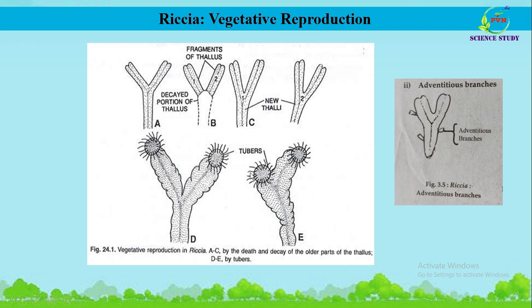The third vegetative reproduction type is tubers. Here you can see the tubers. As the unfavorable season approaches, the apices of some species of Riccia store food material and become thick to form tubers. These tubers are perennating organs, which means they can survive in unfavorable conditions. In unfavorable conditions the total Riccia plant perishes, but the tubers remain alive though dormant. On the return of the favorable season, the tubers germinate to form new plants.